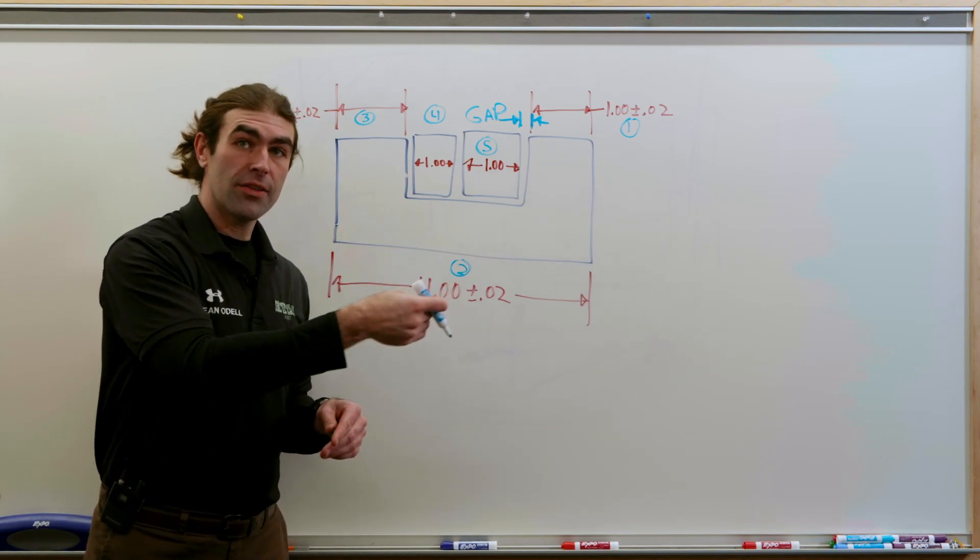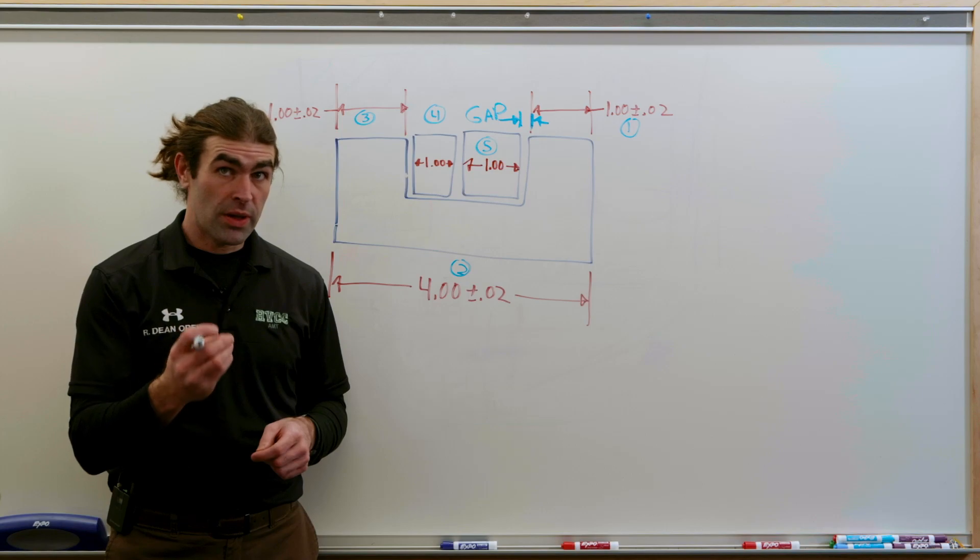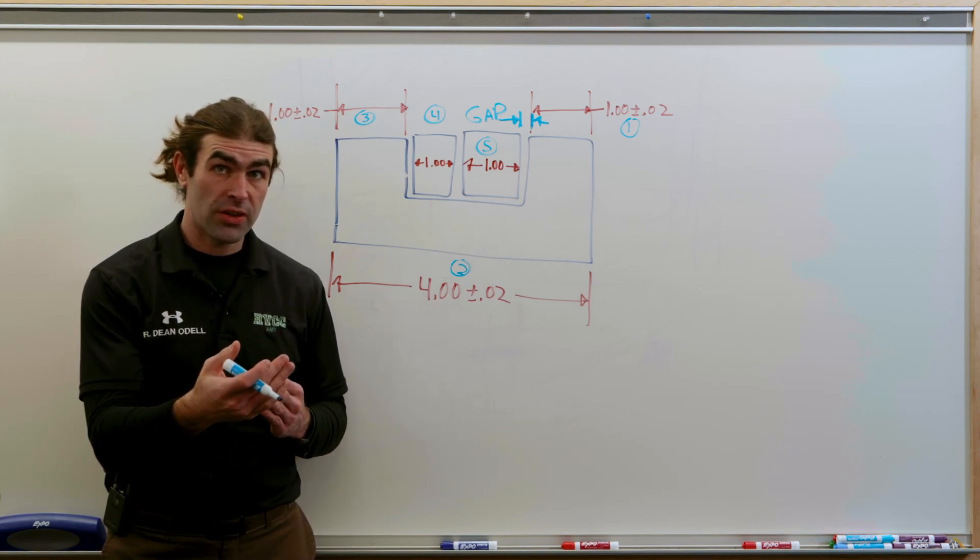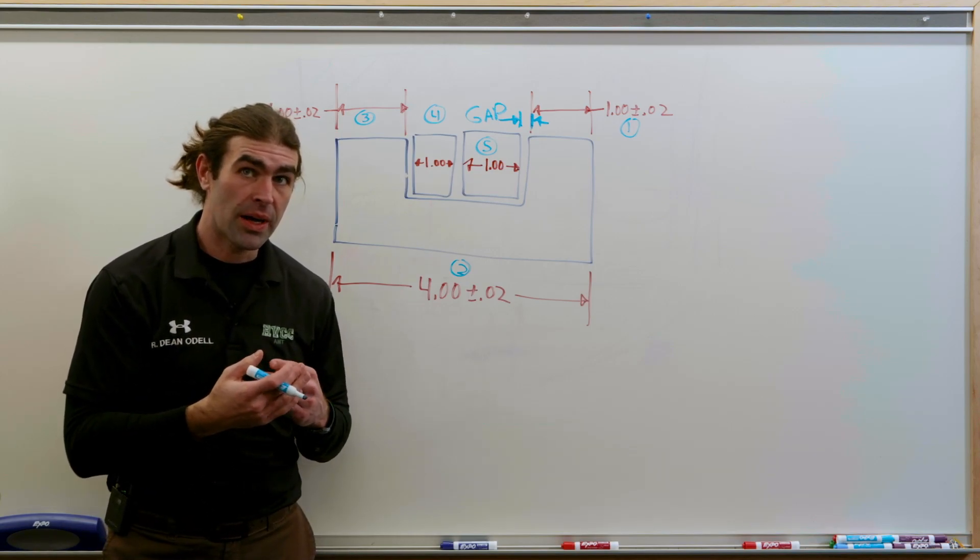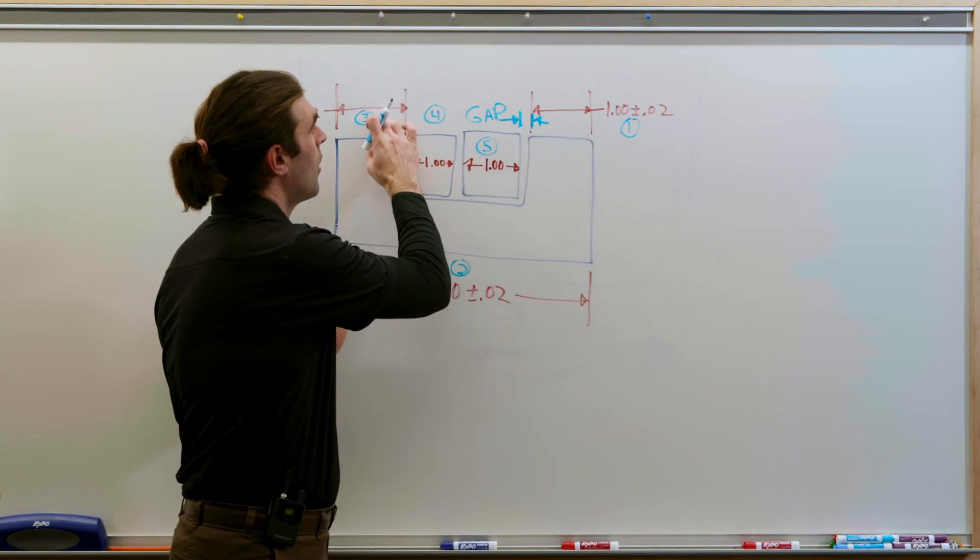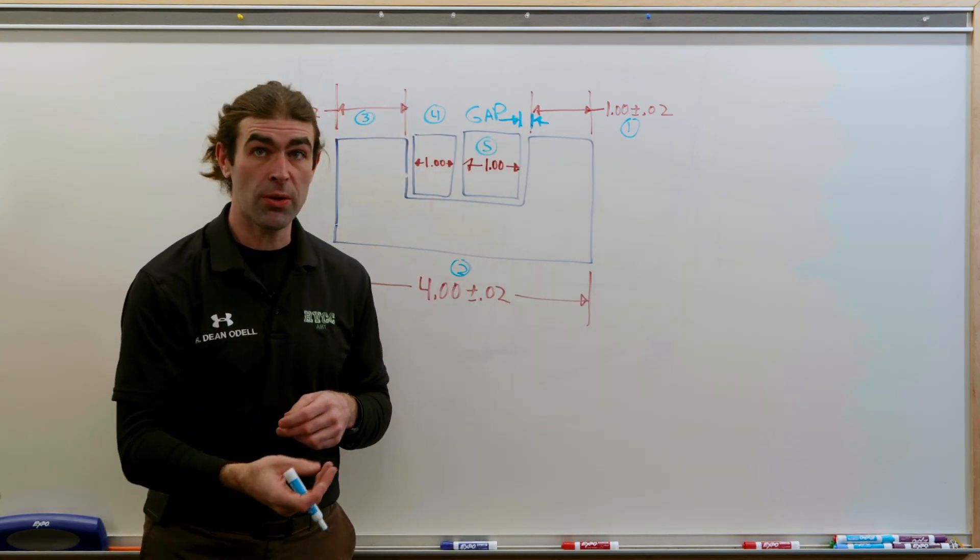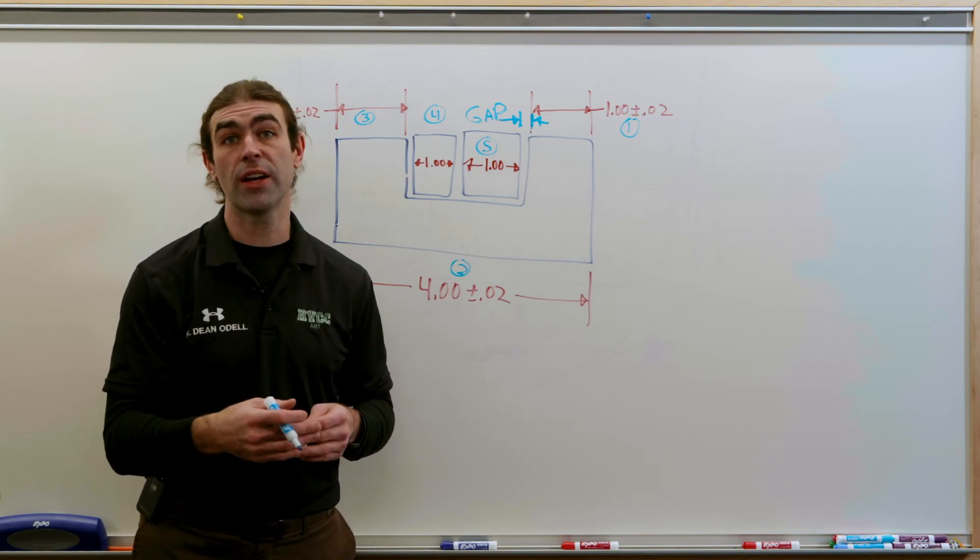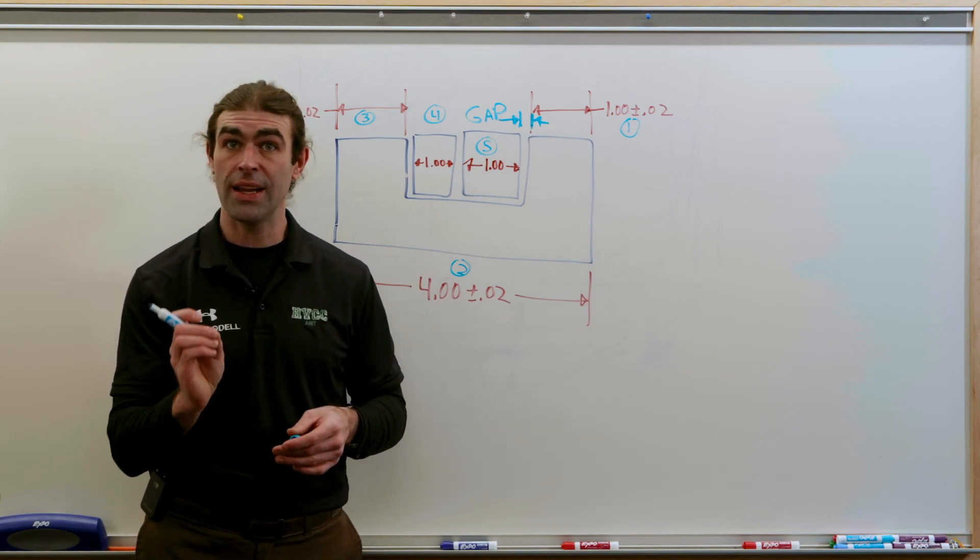Now the reason this works is that all the dimensions depend on each other, right? The size of this gap is dependent on all of these dimensions. And we know that because they all connect, right? The vector loop should only lead you to one answer.